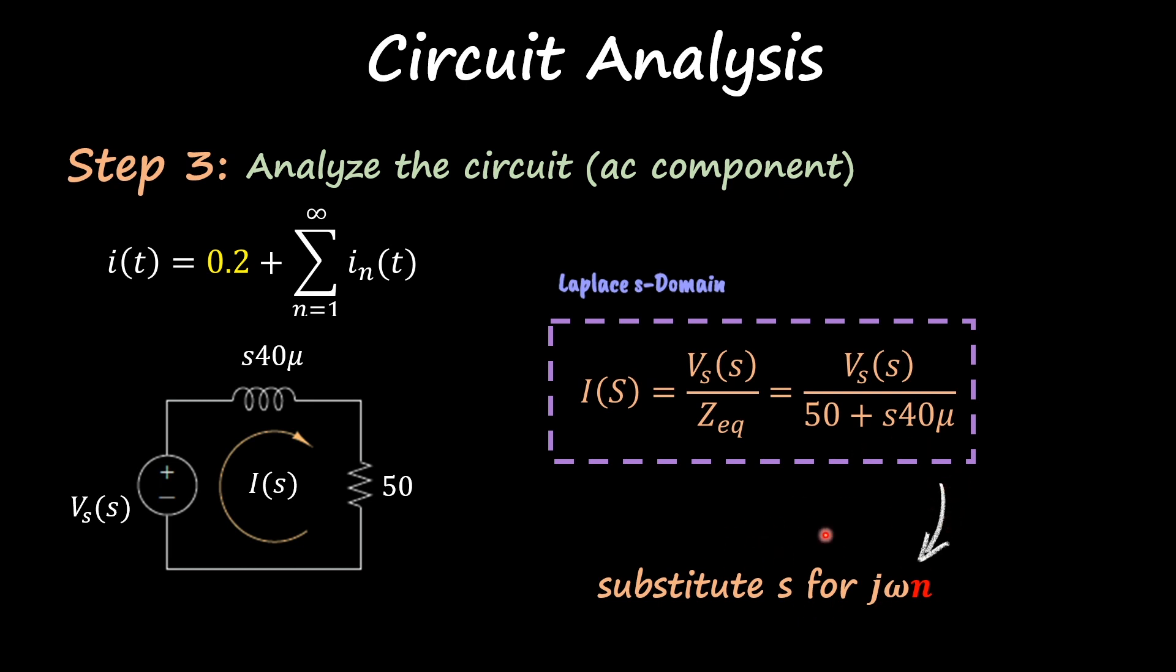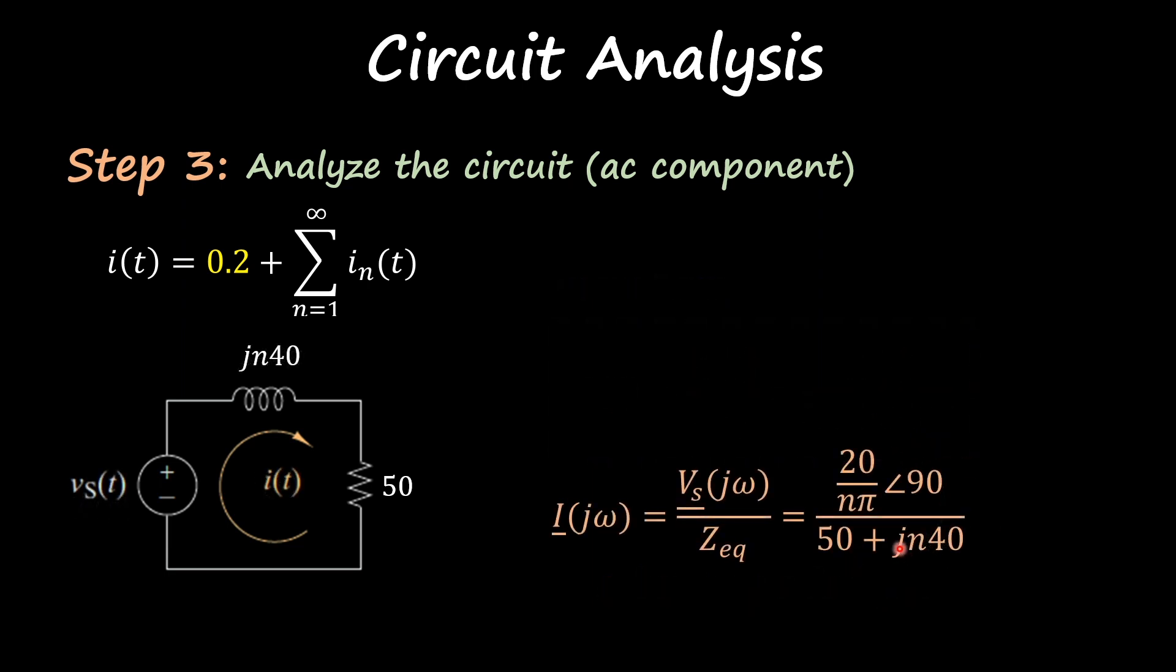If I do that I get j*n*40. Notice here that I already have my omega, which is one mega radians per second, multiplied by the 40 microhenrys, and I get this part over here. And this is your signal, the Fourier series that we just found.